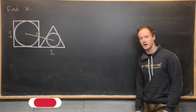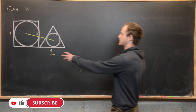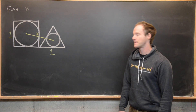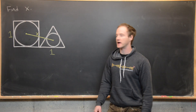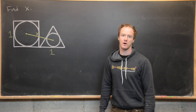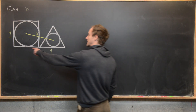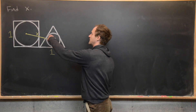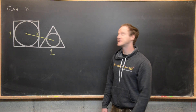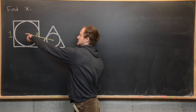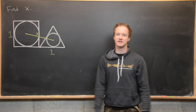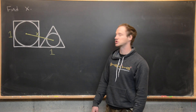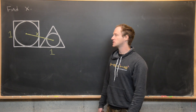Here we're going to look at a nice and quick geometry problem. We have a square with side length 1 and next to it an equilateral triangle, also with side length 1. We inscribe a circle within the square and a circle within the triangle, and we want to calculate the distance from the center of the circle inscribed in the square to the center of the circle inscribed in the triangle.